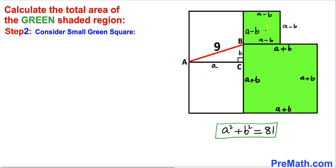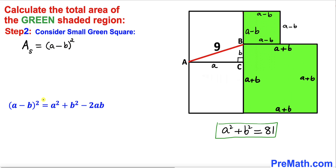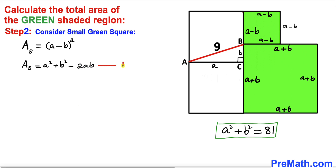Let's consider this small green square with side length A minus B, and recall the area of a square formula: S squared, where S is the side length. So the area of the small green square, A sub S, equals (A minus B) squared. Expanding using the identity, A sub S equals A squared plus B squared minus 2AB. Let's call this equation number one.